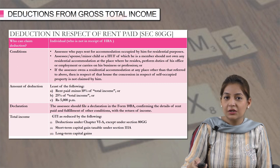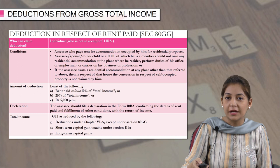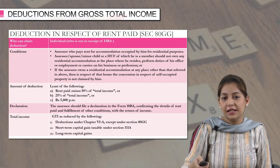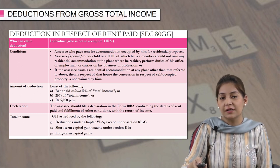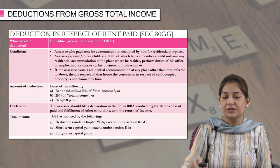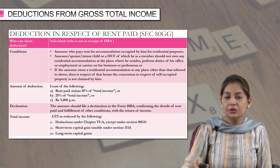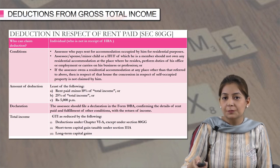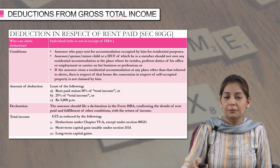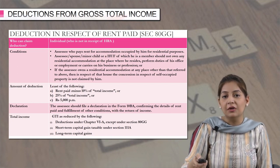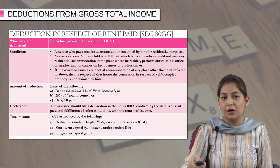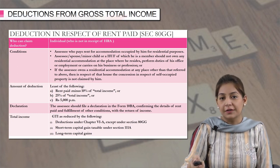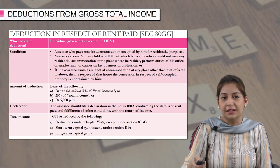But suppose you are not an employee, you are not getting HRA and you are paying rent. For example, if you are a professional paying rent and you want to claim a deduction for the rent paid, you can claim the deduction under section 80GG. There are certain conditions to be fulfilled. Number 1: the assessee pays rent for accommodation occupied by him for residential purpose.